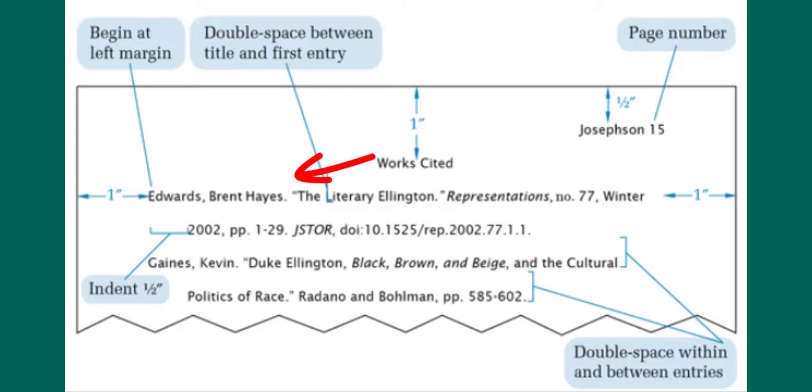There should be a double space between the title and the first entry. Works Cited are listed alphabetically by the first item that appears in each citation. Citations will be double-spaced with no extra spaces between each one.